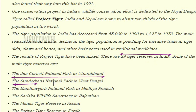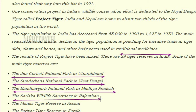Some of India's major tiger reserves include Jim Corbett National Park in Uttarakhand, Sundarbans National Park in West Bengal, Bandhavgarh National Park in Madhya Pradesh, and Sariska Wildlife Sanctuary in Rajasthan.